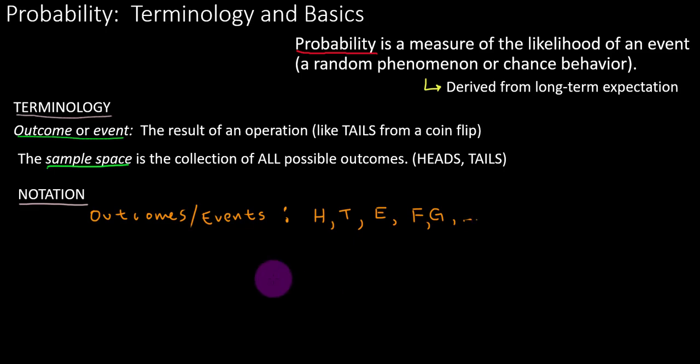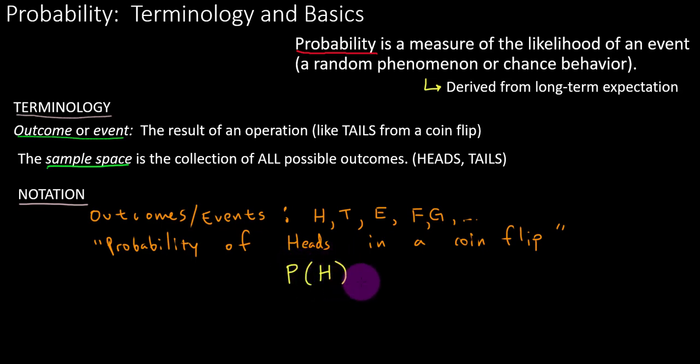And if we wanted to refer to say the probability of a particular event, say the probability of flipping a heads in one coin flip, that's a lot to write every single time, right? But we can shorthand that by instead the event H is representing heads. And we want the probability of H. So probability parentheses inside the parentheses is the event.